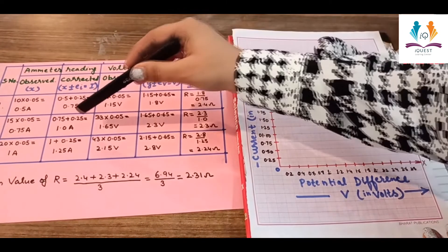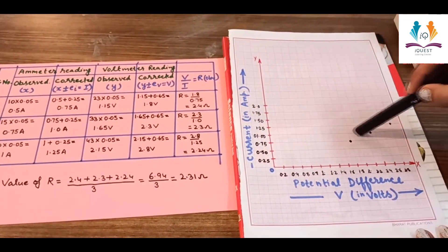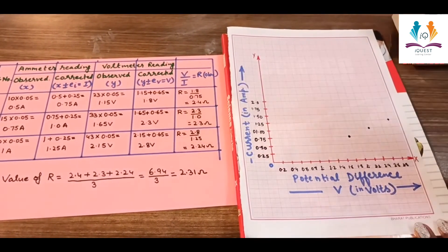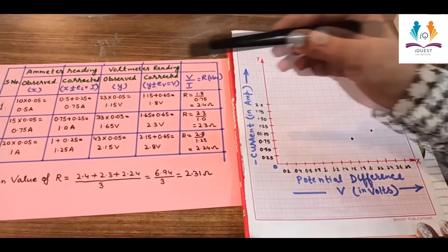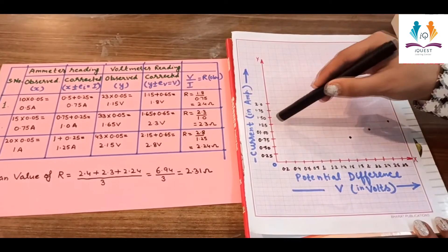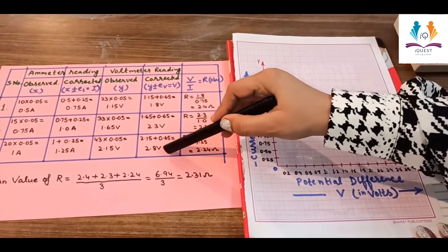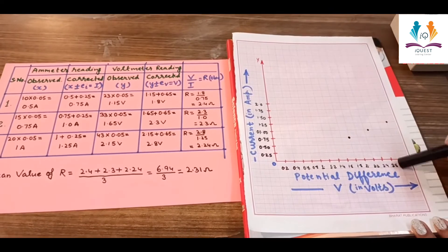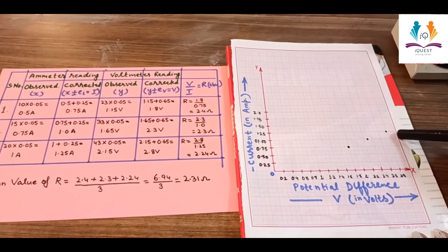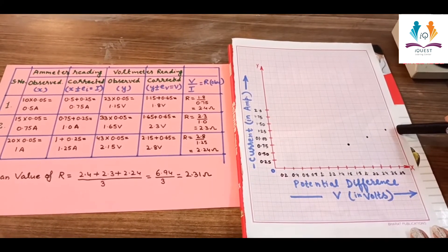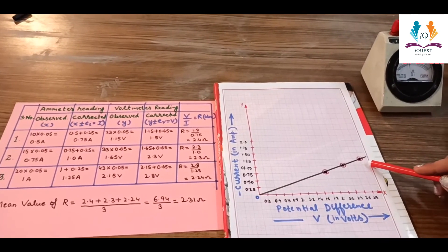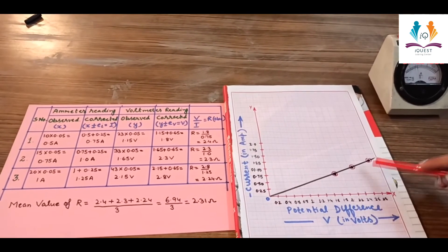In the second reading, current is 1 ampere and voltage is 2.3 volts. These are the three observation points. When we join them, we get a straight line, which verifies Ohm's law that potential difference is directly proportional to current.